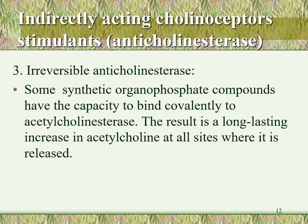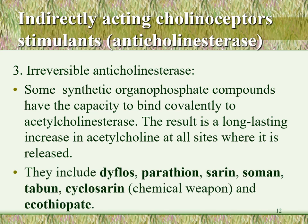Most irreversible anticholinesterases have non-medical uses. They include diisopropyl fluorophosphate (DFP), parathion, and malathion, which are used as insecticides. Sarin, soman, tabun, and cyclosarin can be used as chemical weapons — also called nerve gases — because when inhaled during an armed attack, they are systemically absorbed and concentrate especially at the neuromuscular junction.